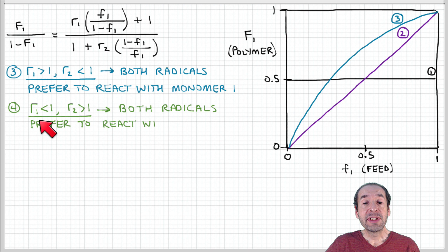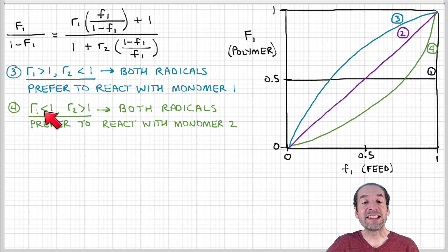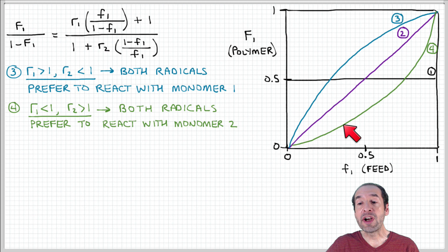A fourth case is where both radicals prefer to react with monomer 2 — R1 is less than 1 and R2 is greater than 1. A growing chain with monomer 1 at the end prefers to add monomer 2, and a growing chain with monomer 2 at the end also prefers to add monomer 2. So no matter the feed composition of monomer 1, the copolymer composition will be less than the feed fraction, because monomer 2 is preferred during propagation.